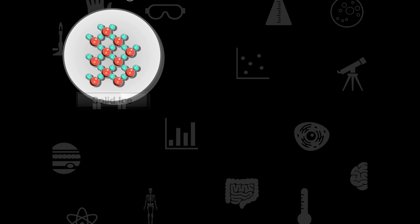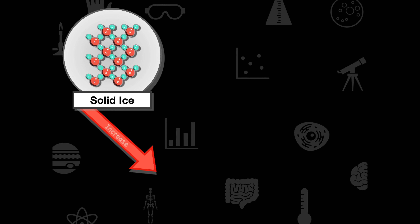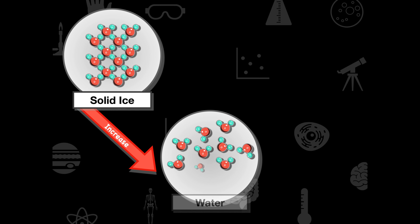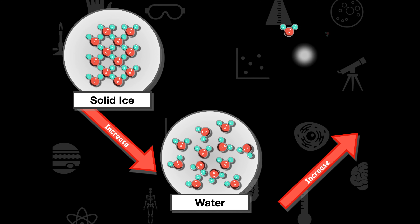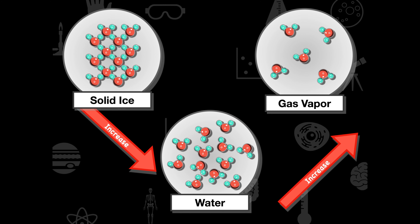Before getting into those processes, we need to understand the structure of water. Water can exist as a solid, a liquid, and a gas — we've seen these commonly in daily life. In a solid, the molecules are very rigid and compacted together. As we increase the amount of energy and vibrational pattern of those molecules — increasing temperature and energy — we see it turn into liquid water.